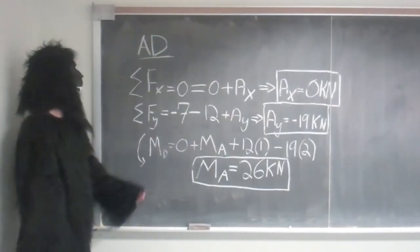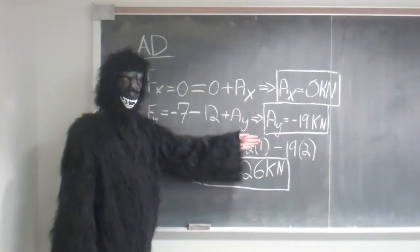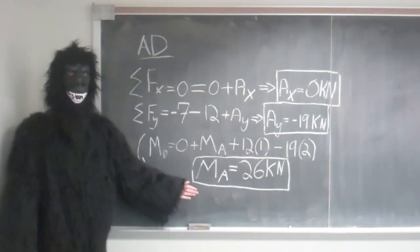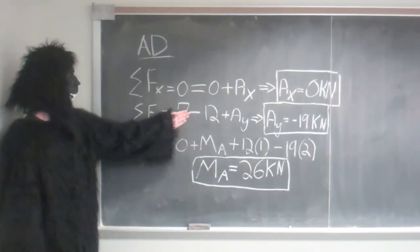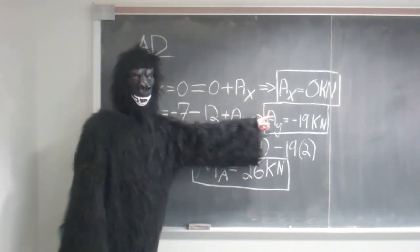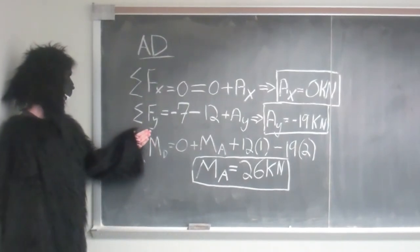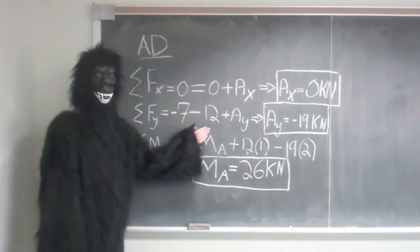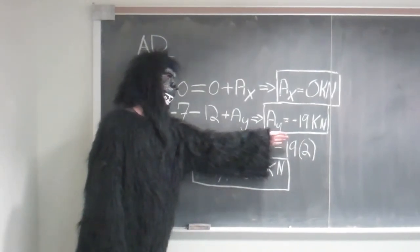Within the segment AD, we are trying to find the forces AX, AY, and the moment at point A. To find AX, we took the sum of the forces at F of X, which gives us DX plus AX, which ends up with AX being equal to 0. In F of Y, we have our DY, our distributed load, and our AY, which gives us that AY is equal to negative 19 kN.